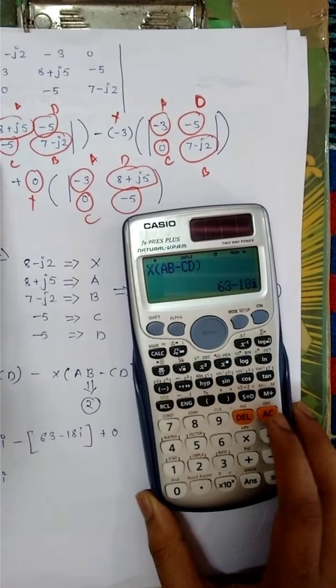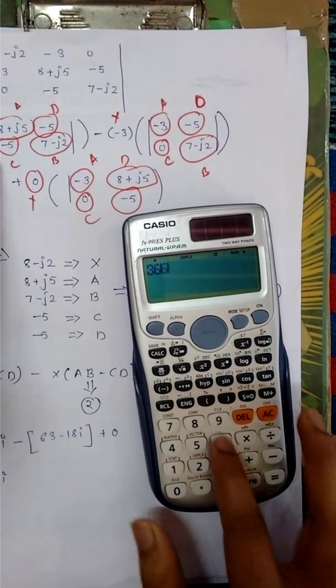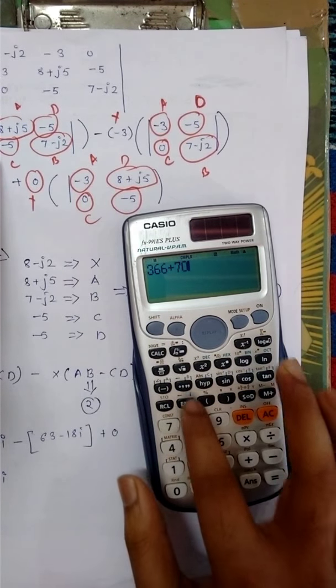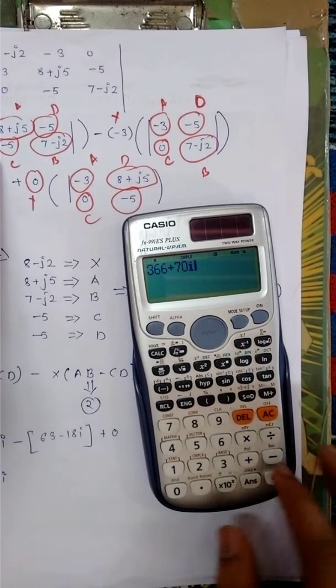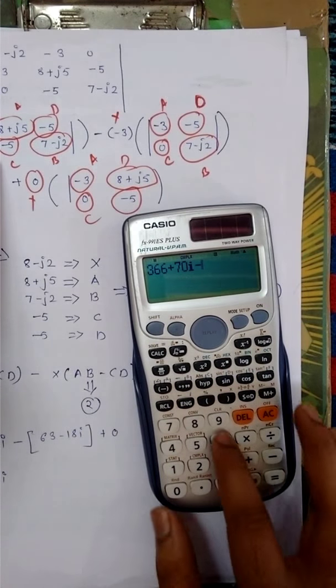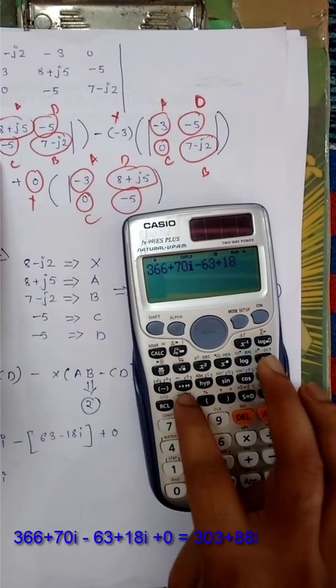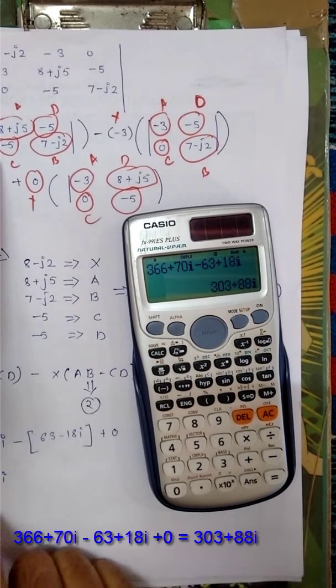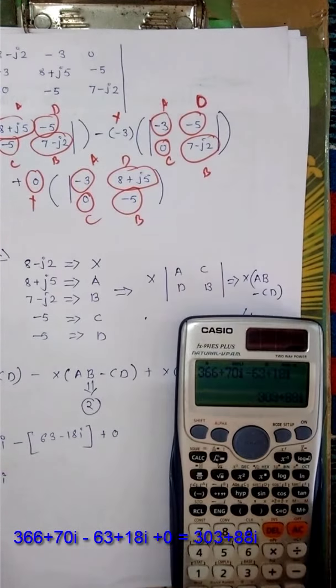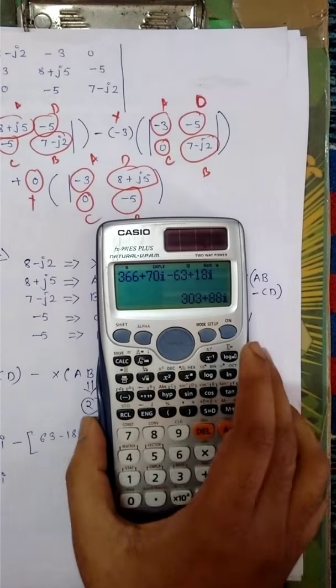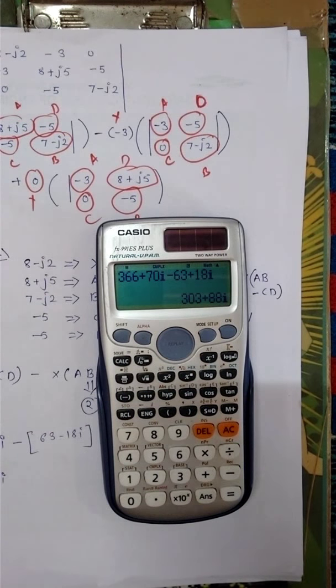After that you have to add this term: 366 plus 70i minus 63 plus 108i. This is the result that I want. I solved by my ES calculator by using matrix: 306 plus 1080i.